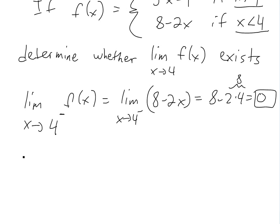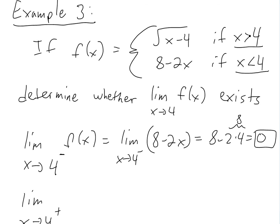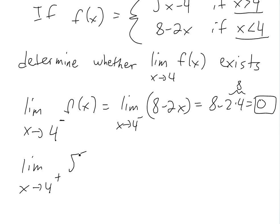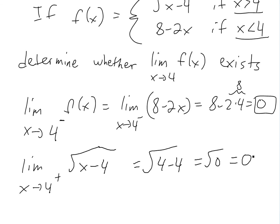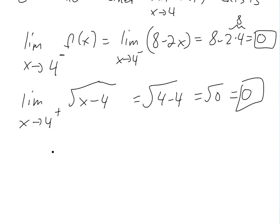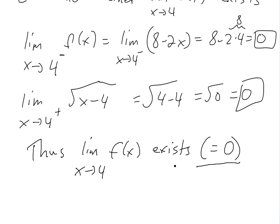From the right side — where x is greater than four — we look at square root of x minus four. Plugging in four: square root of four minus four equals square root of zero, which equals zero. Both sides approach zero, so the limit exists and equals zero.